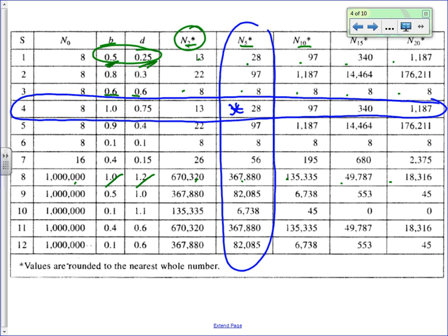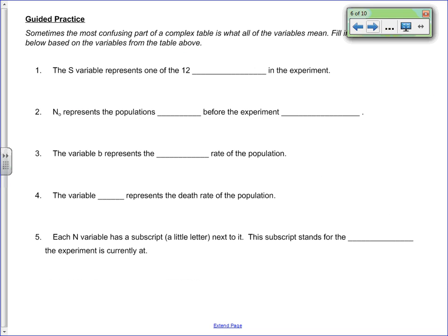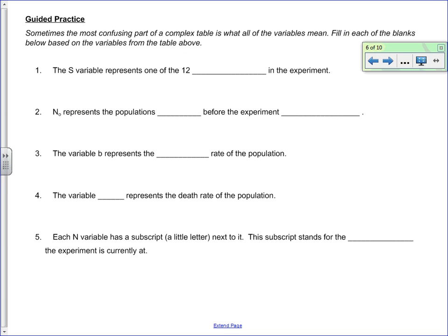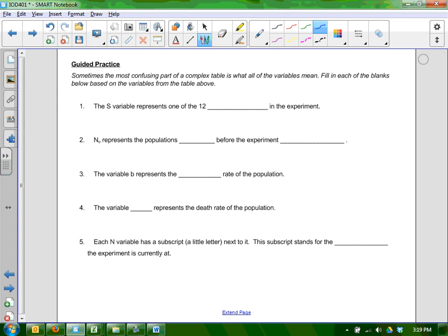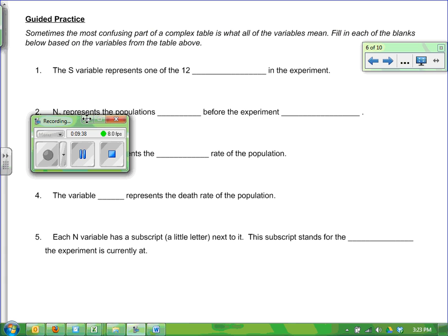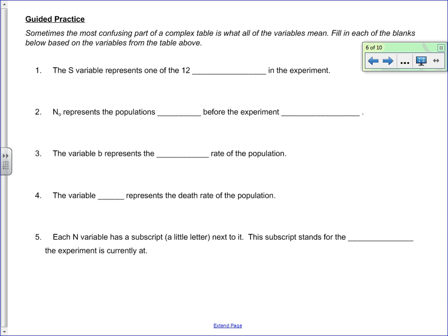What you want to do now is pause and answer questions 1 through 5. These questions are not IOD 401 questions yet — they'll help you get accustomed to the table. When you've answered them all and want to check the answers, press play. These questions are really just to help you wrap your head around the table itself, which can be incredibly intimidating if you don't spend a little time with it first.